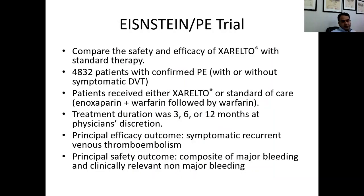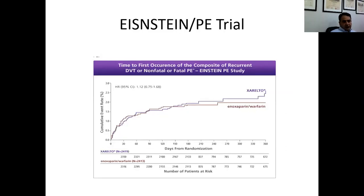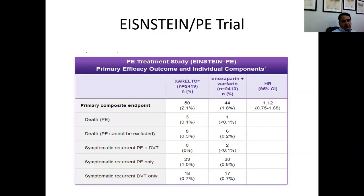The EINSTEIN PE trial compared rivaroxaban with standard therapy in patients with confirmed PE with or without symptomatic DVT. Patients received either Xarelto or standard care — Lovenox plus warfarin — for 3, 6, or 12 months. The principal efficacy outcome was symptomatic recurrent VTE and the principal safety outcome was a composite of major bleeding and clinically relevant non-major bleeding. After one year, 50 of approximately 2,400 patients on Xarelto experienced the primary endpoint versus 44 patients (1.8%) in the Lovenox and warfarin arm.